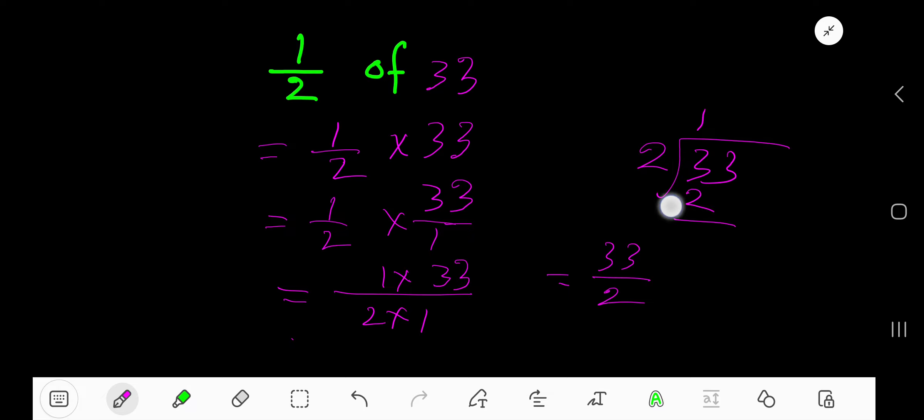If you subtract, you are getting 1. Bring down this 3, so 2 goes into 13 how many times? 6 times. 6 times 2 is 12. If you subtract, you are getting 1. So 16 is your whole number.